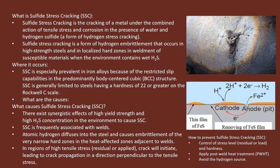Sulfide stress cracking is a form of hydrogen embrittlement, similar to what we discussed in hydrogen induced cracking. However, in this scenario it occurs only in high-strength steels, in localized hard zones, and in environments containing wet hydrogen sulfide. This is what sulfide stress cracking is. In most cases it occurs in iron alloys because of restricted slip capabilities.